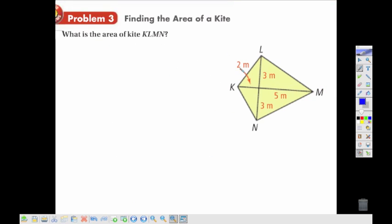So in this example, I have a kite, and one diagonal would be, we want the whole diagonal, so 3 plus 3 gives me 6. My other diagonal would be going with the 2 and the 5, and that would be 7.